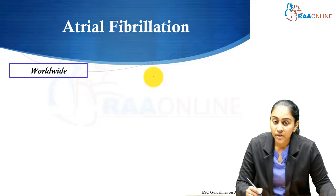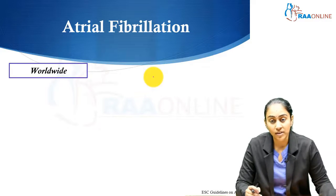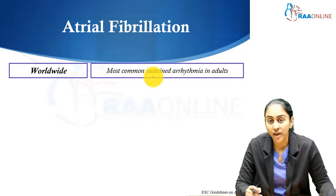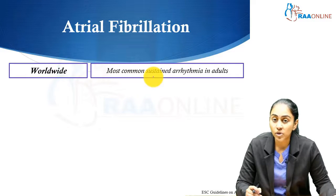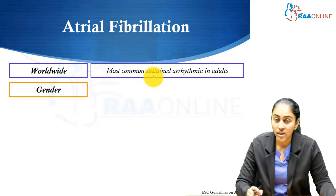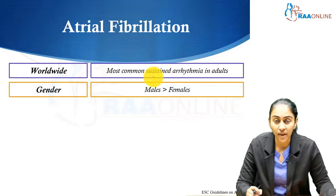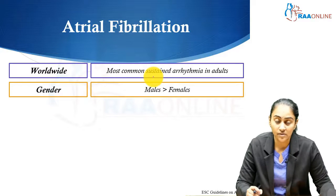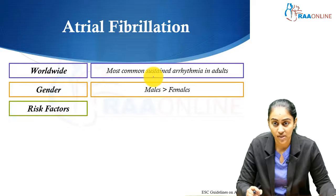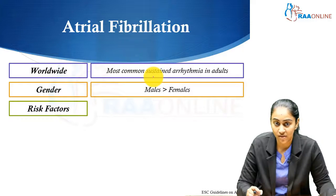A few important facts about atrial fibrillation: worldwide it is the most common sustained arrhythmia in adults, particularly in the elderly population. These patients have a male predisposition — males have a higher risk of developing atrial fibrillation. Age is a very important risk factor; as age increases, risk for atrial fibrillation increases, with most patients being aged above 60 to 65 years.